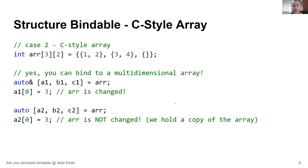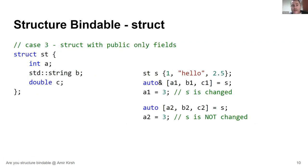C-style arrays are also structure-bindable. Interestingly, you can even bind multi-dimensional arrays: binding into a1 gives you a 1D array by reference, so changing index 0 changes the inner array. Binding by value copies the inner array into a2. And for a struct with all public fields, you can again bind by ref or by value. These are all three different cases.